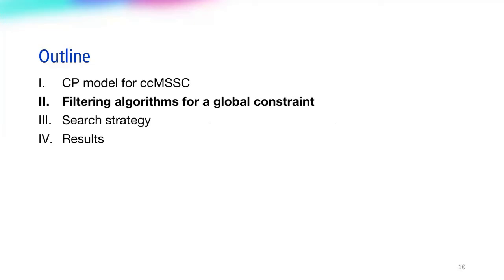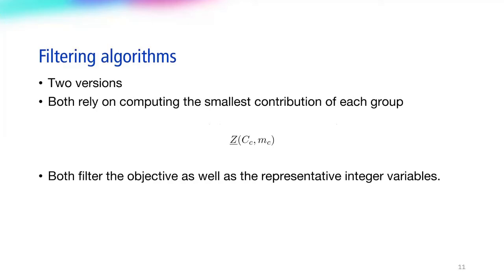The first part of our work are two filtering algorithms, a standard one and a more advanced, more thorough one, for a global constraint to speed up resolution of the cardinality-constrained MSSC. Both versions rely on computing the minimum contribution of each class to the objective z at each point in the search tree. The global constraint that implements these filtering algorithms will filter both variables x as well as the objective z.